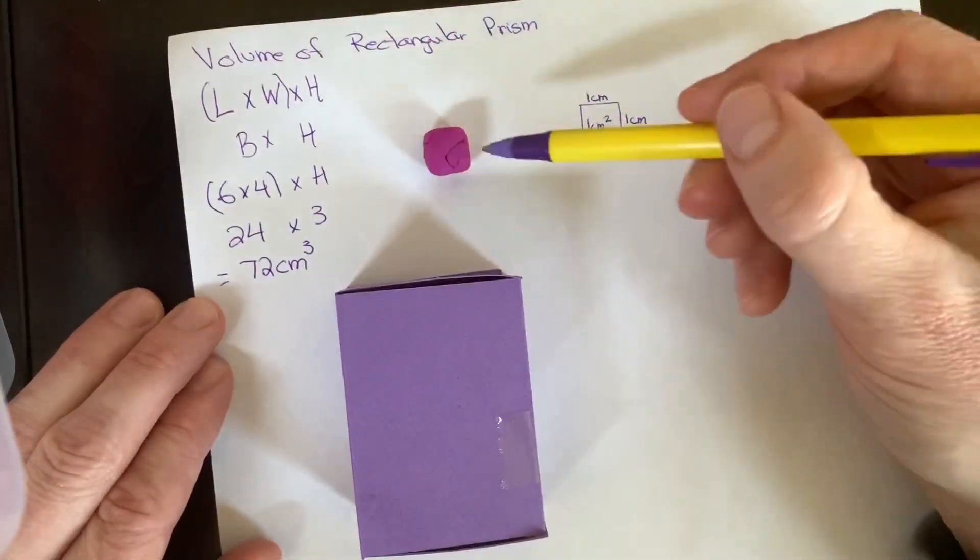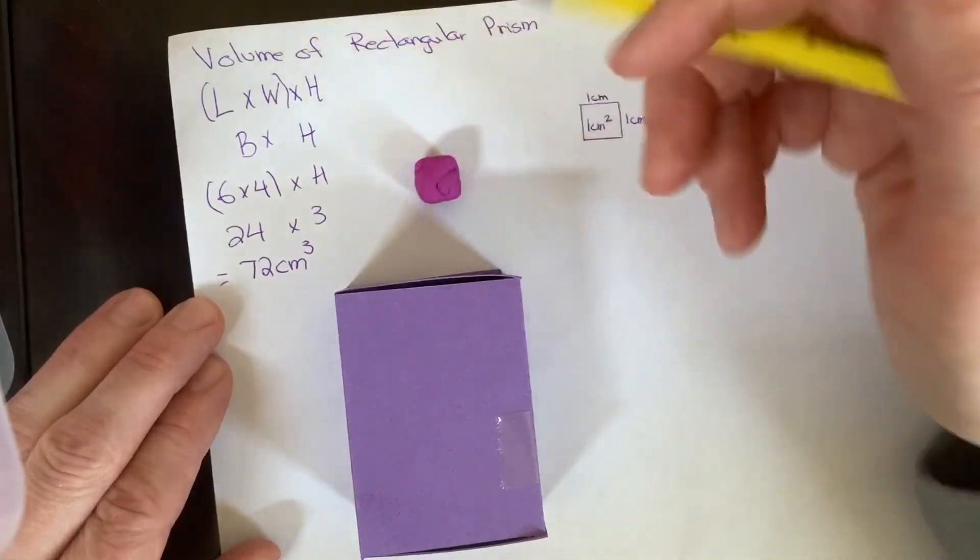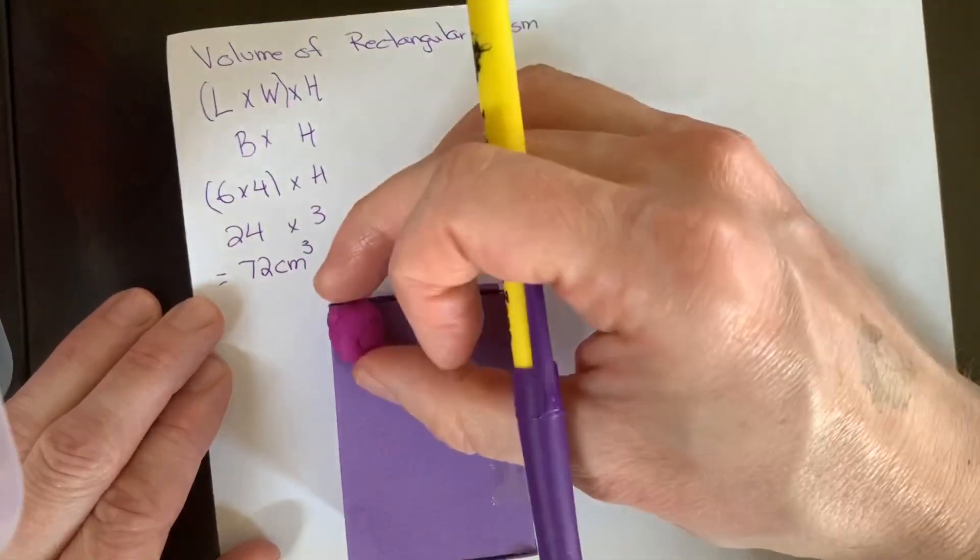So if I wanted to, I could fit 72 of these little cubes into this rectangular prism.